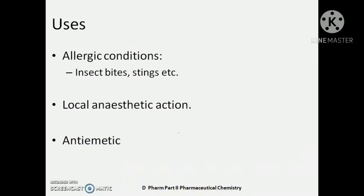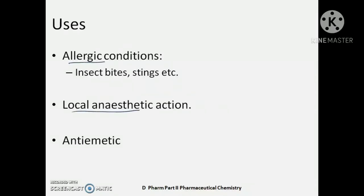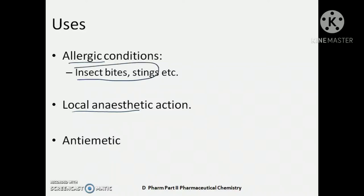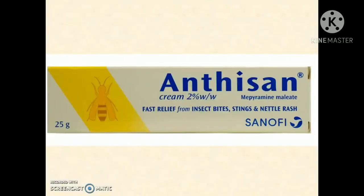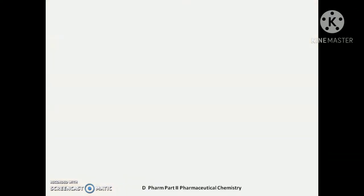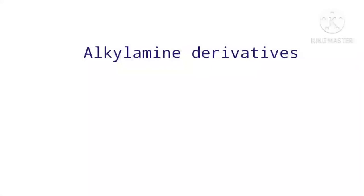The uses of Mepyramine: it is used in allergic conditions. Being an H1 receptor antagonist, it is an antihistaminic. It is used especially for allergy arising from insect bites and stings. It also has a local anesthetic action, so it can be used for the relief of pain as well as allergic reactions associated with insect bites. A product available contains Mepyramine maleate as a 2% w/w cream for relief from insect bites. That is all about the ethylenediamine derivative, Mepyramine.